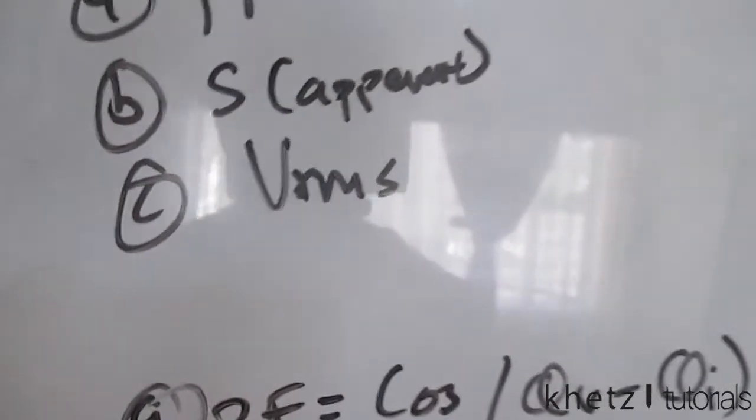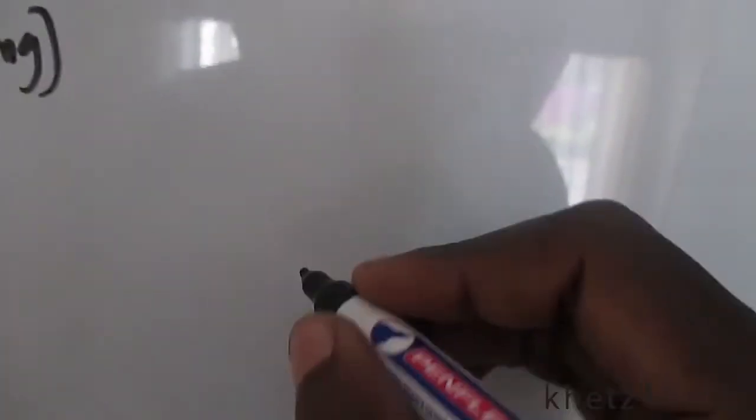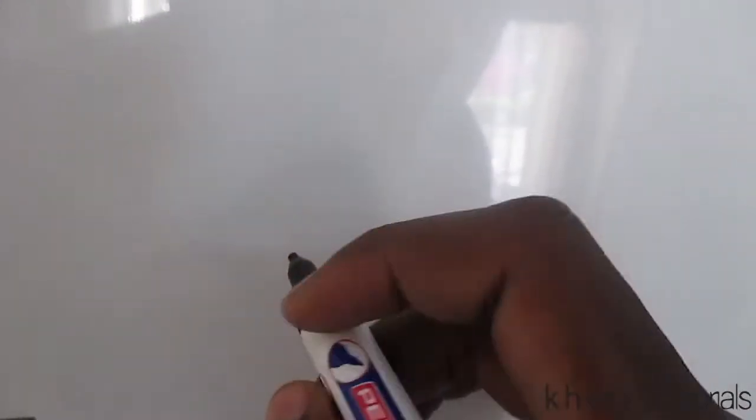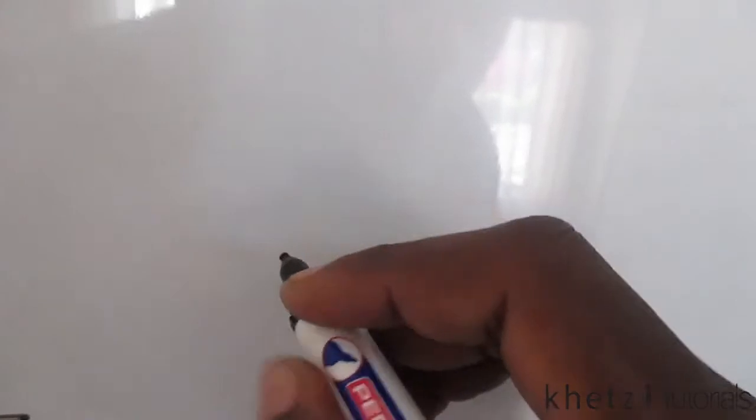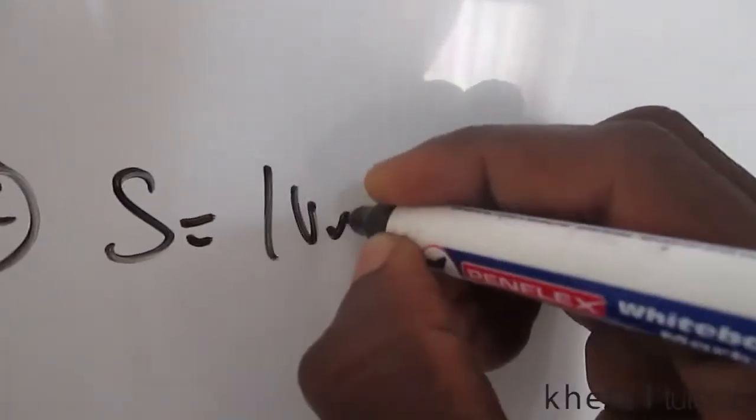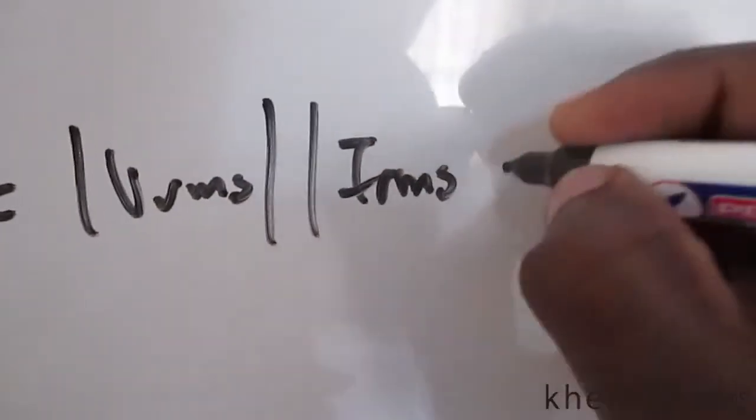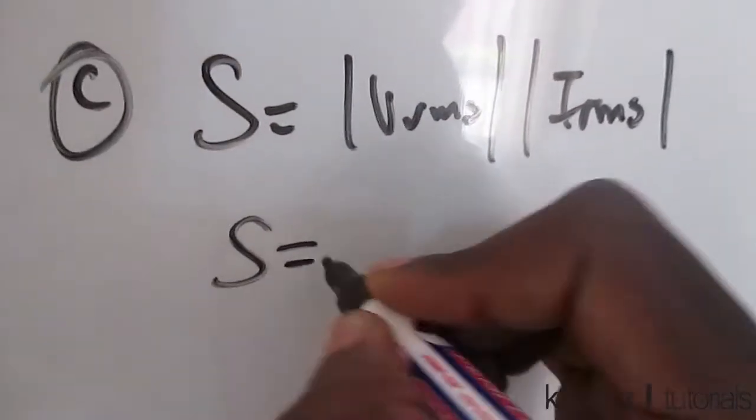Now moving on to the final part of the question, it is asking for Vrms. Another formula for apparent power is apparent power equals the magnitude of Vrms multiplied by the magnitude of Irms.